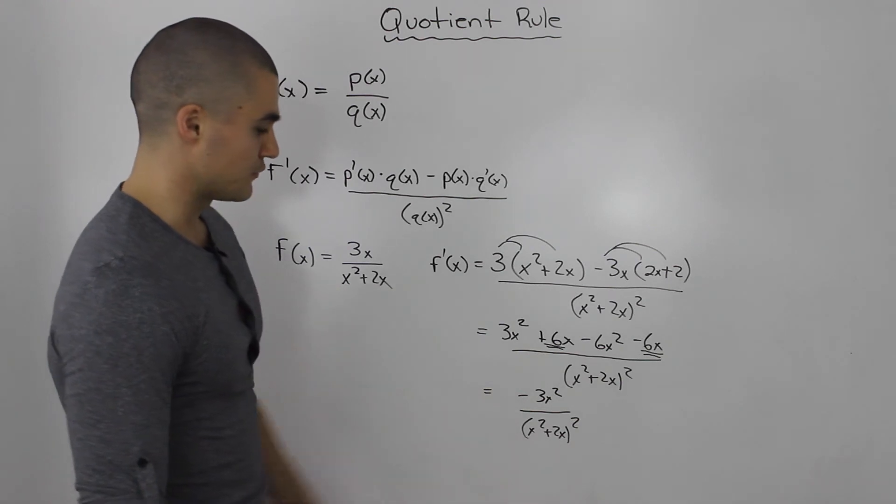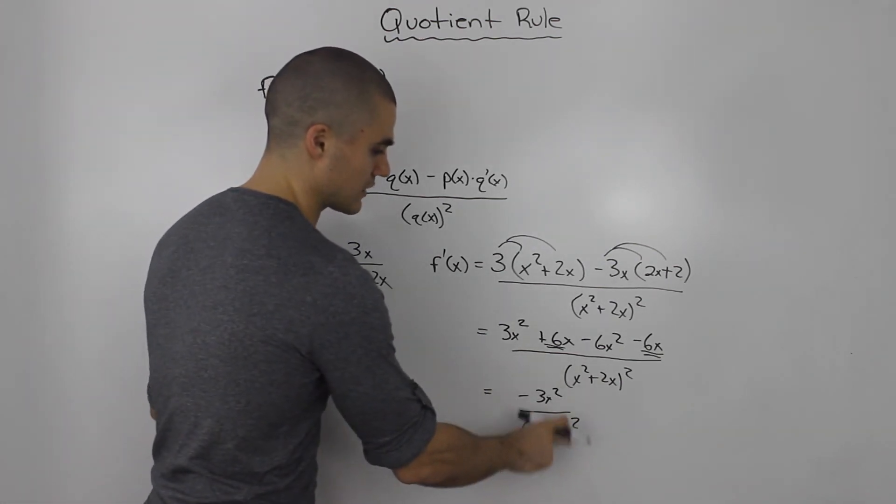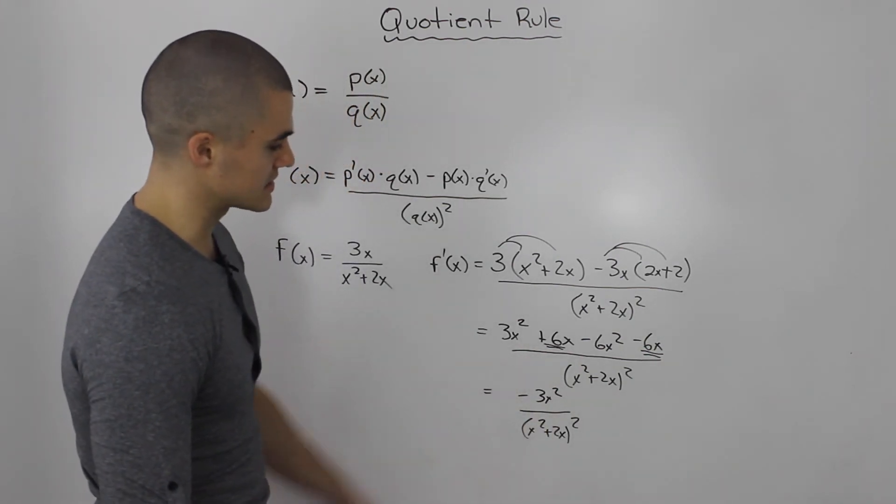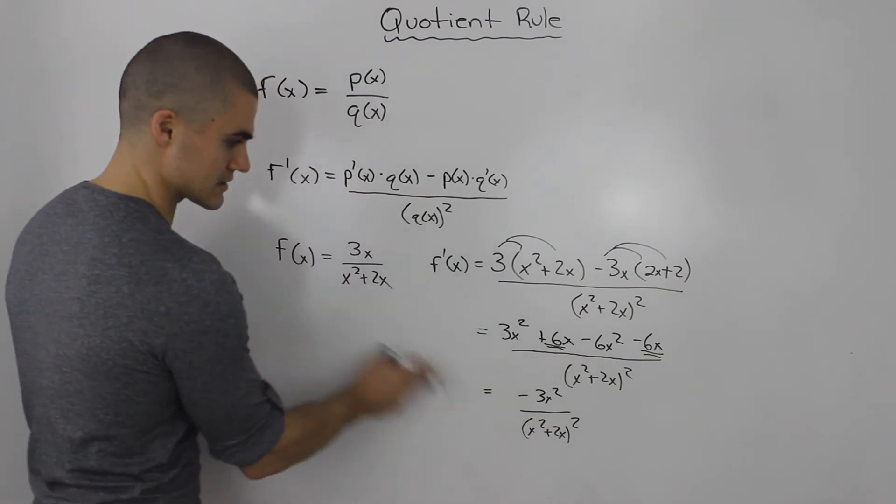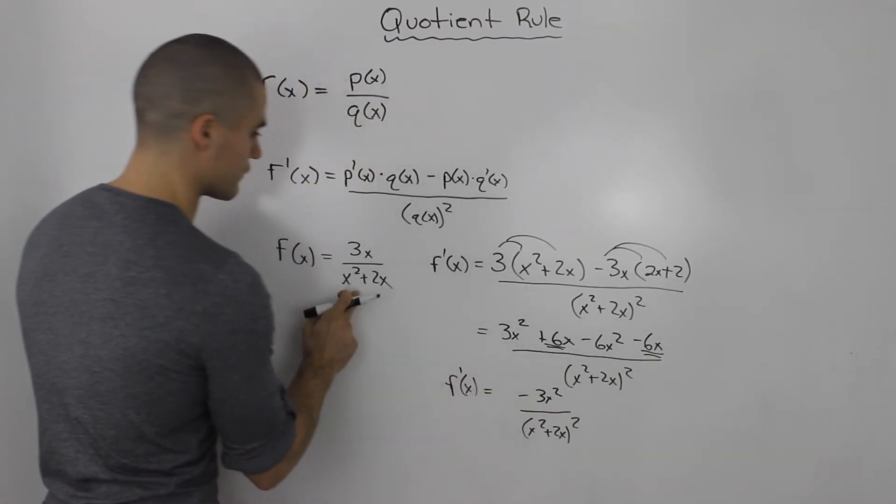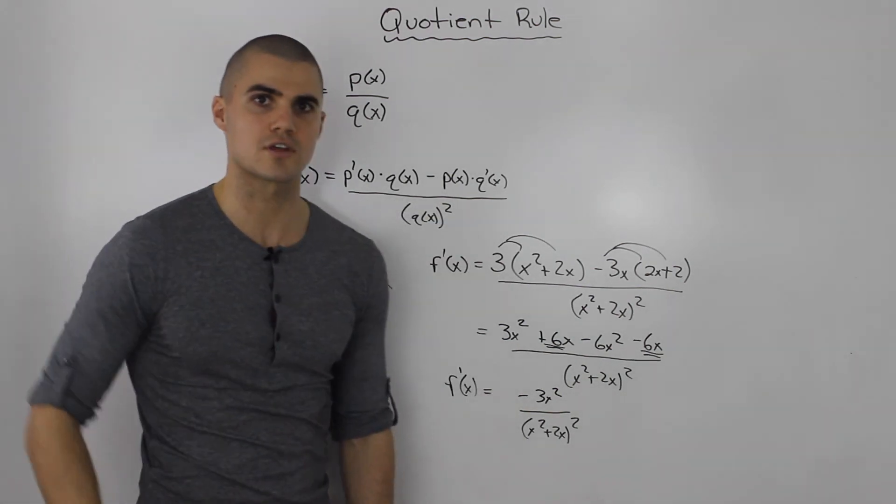That's as simplified as we can get. Unfortunately, in this case, nothing cancelled between the denominator and numerator, but sometimes it will. That's the derivative of this function using the quotient rule.